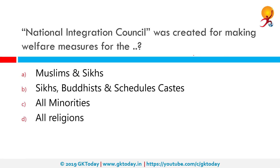The National Integration Council was created for making welfare measures for whom? The National Integration Council (NIC) was set up in June 1962 by Prime Minister Jawaharlal Nehru to address the problems of communalism and regionalism in India. It is chaired by the Prime Minister and has members including union ministers, leaders of opposition in the Lok Sabha and Rajya Sabha, chief ministers of states and union territories, leaders of national and regional political parties, eminent journalists, and other public figures. The NIC is an extra-constitutional body with no statutory or constitutional backing, and the correct answer is all minorities.